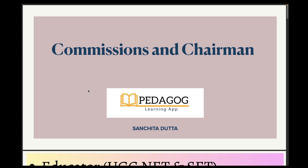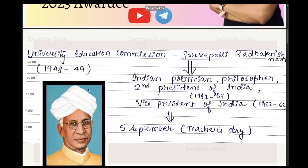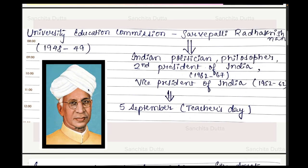The link is in the description box. Let's start the session without wasting any more time. The first education commission was the University Education Commission of independent India — it came in 1948-49. Its chairman was Dr. Sarvapalli Radhakrishnan, who was an Indian politician and philosopher, and the second President of India. His tenure was 1962 to 1967. He was also the first Vice President of India, and his birthday, 5th September, is celebrated as Teachers' Day.